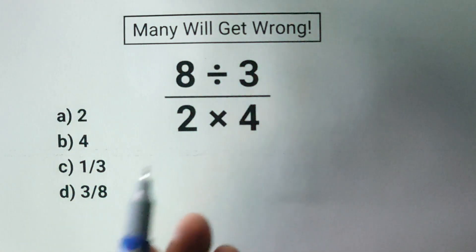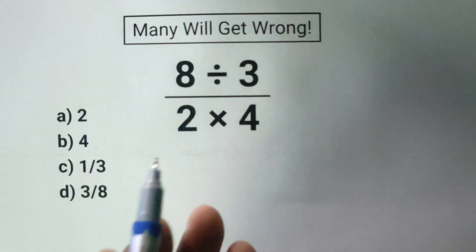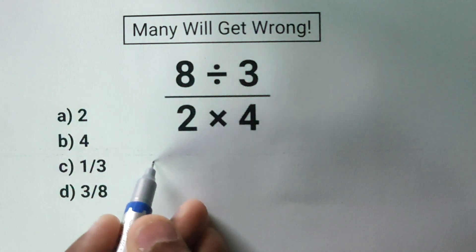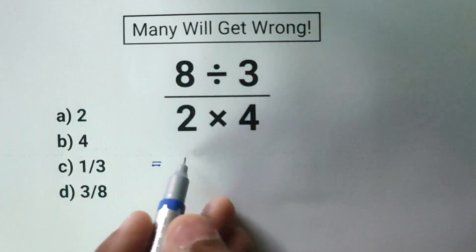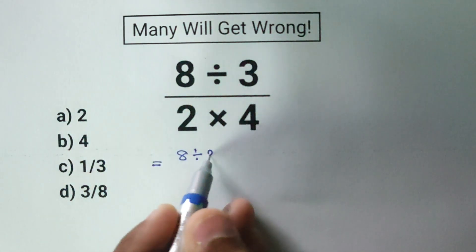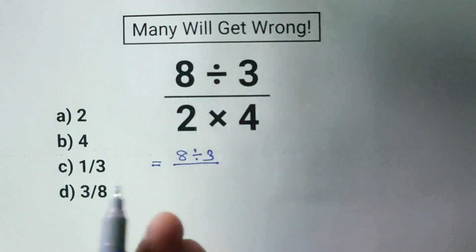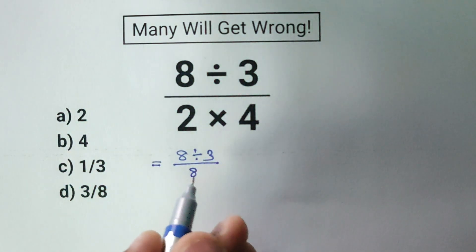Alright, the key to solving this problem is following the correct order of operations and simplifying step by step. Before we start dividing, let's simplify the denominator first. In the denominator, we have 2 times 4. Multiplying them gives us 8.